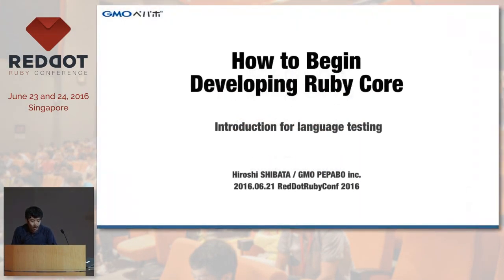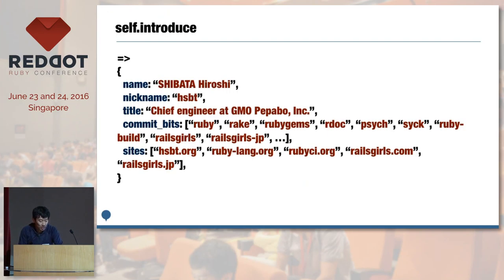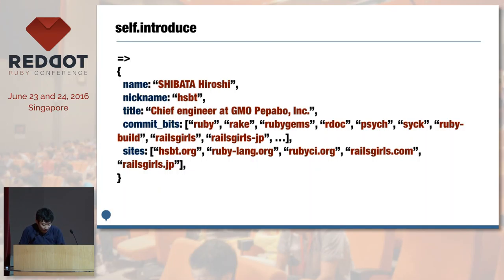Hello everyone. I'm going to talk about how to be involved in Ruby core language development. I'm from Tokyo, Japan, and I'm a member of the Ruby core team. I maintain RubyGems, RIG, RDOC, and many other RubyGems.